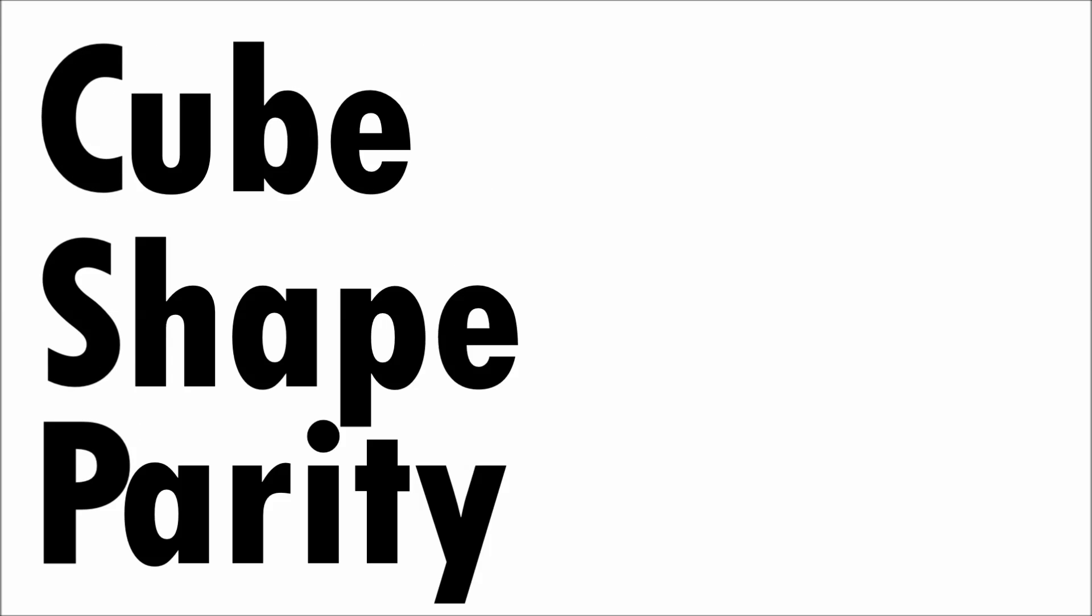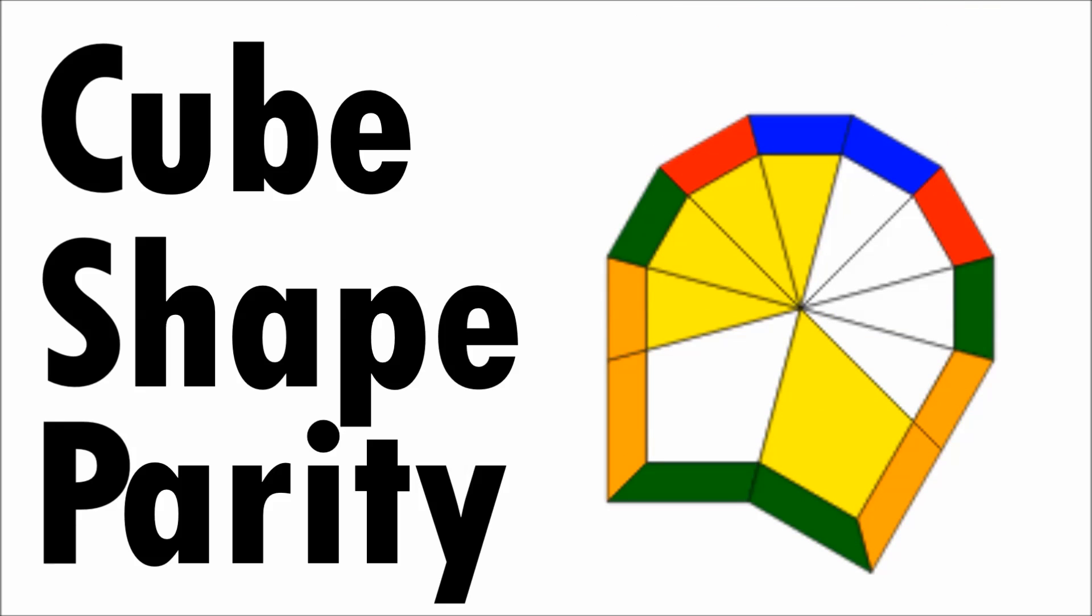CSP, or Cube Shape Parity, is a method in Square-1 where you never get parity by eliminating any parity errors while doing Cube Shape. This method has been one of the biggest jumps in terms of methods for Square-1.